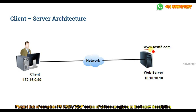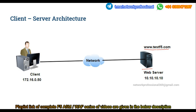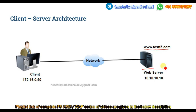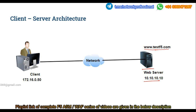Consider that www.testfi.com is a web application running on a particular server. Any web application, or whatever application it is, should be operational on a server. It can be a dedicated server or a VM server — it needs a server to operate. So any web application will be running in the server, and this is our web server. Maybe it has IP address 10.10.10.10. If any client wants to access this particular application, testfi.com, they need to connect over the network to reach the destination — the web application.